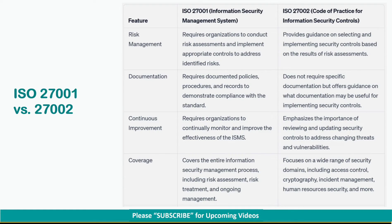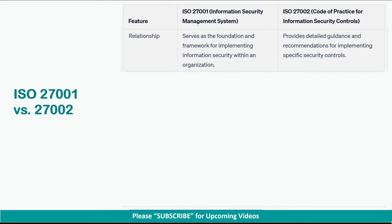ISO 27001 covers the entire information security management process, including risk assessment, risk treatment, and ongoing management. ISO 27002 focuses on a wide range of security domains, including access control, cryptography, incident management, human resources security, and more. ISO 27001 serves as the foundation and framework for implementing information security within an organization. On the other hand, ISO 27002 provides detailed guidance and recommendations for implementing specific security controls.